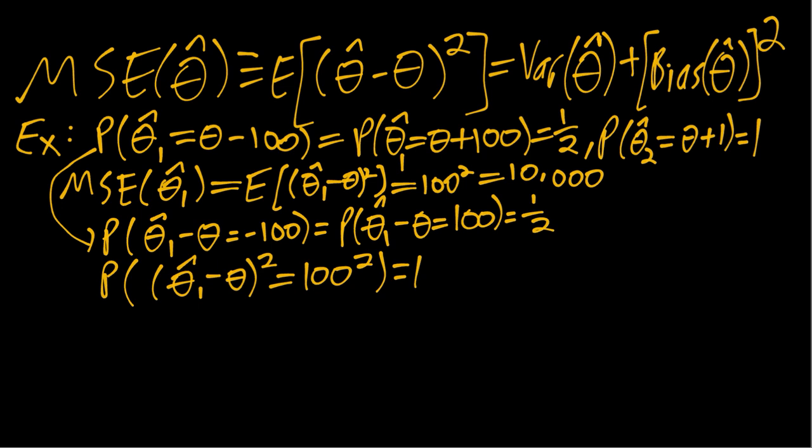And then for our theta hat two, our mean squared error, well, if we see here, theta hat two is always theta plus one. So theta hat two minus theta is always one. One squared is again one. So we basically have the mean of one, one squared, which is just one.